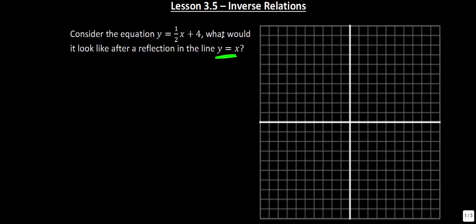This is written in y equals mx plus b — it's just a linear function. We have a y-intercept at 4, a slope of up 1 over 2, and so you'd have something that would look like so. You would get a graph that looks like that.